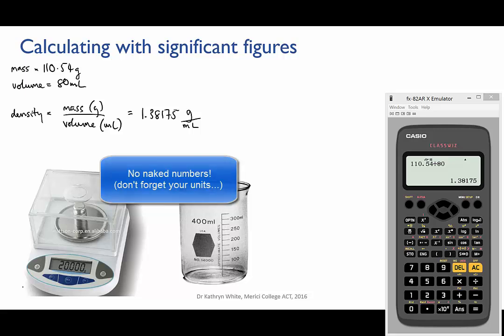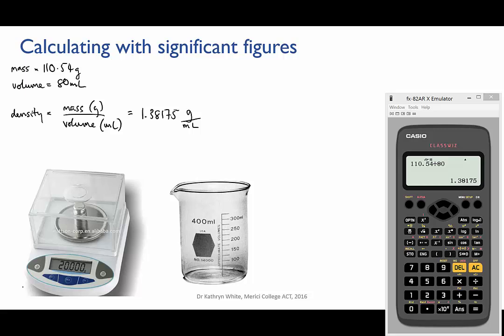So the answer that the calculator has given has six significant figures. Now can I really be that accurate in my density value if I only knew the volume to 1 sig fig? Of course not.